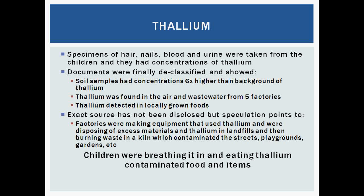They had started to treat it as thallium once all the epi had pointed to it. It wasn't until a year later — when governments finally opened up and declassified documents — that they confirmed it. Soil samples had concentrations six times higher than background levels of thallium. Specimens of hair, nail, blood, and urine from the children showed high concentrations of thallium. It was found in the air and wastewater from five different factories in the area, and also detected in locally grown foods. The suspected source was a factory making equipment whose main chemical was thallium — they were burning the waste in a kiln, which aerosolized and contaminated everything: playgrounds, streets, gardens. And because children put things in their mouths — playing outside or eating from local gardens — they were getting high doses of thallium and having signs and symptoms.